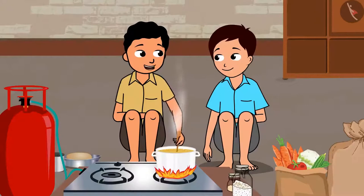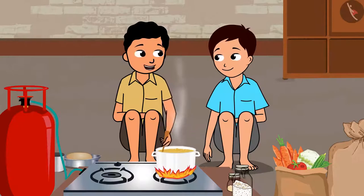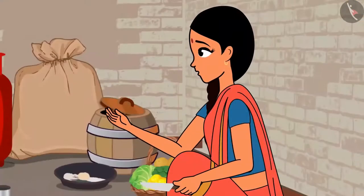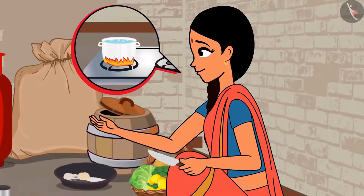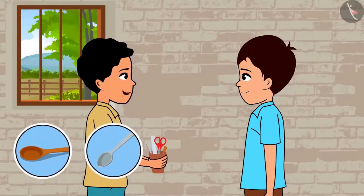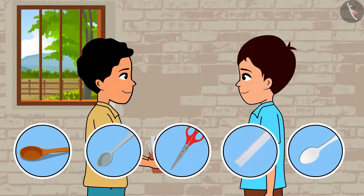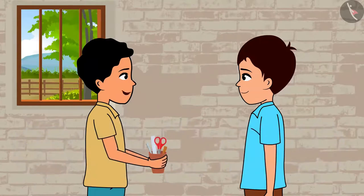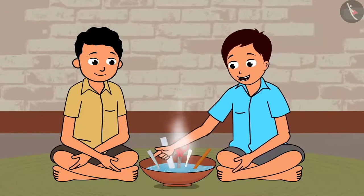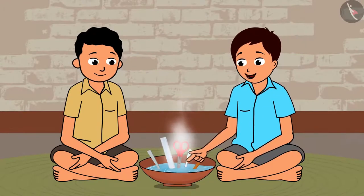Ramesh, let us do an experiment. Let us take different objects made up of different materials. Then let us dip them in hot water one by one. Let us then observe what happens to each object. Children, I shall warm the water and give it to you. Look Ramesh, I have this wooden spoon, steel spoon, this pair of scissors, this plastic scale and this ceramic spoon. Come let us dip all of them in this hot water. Look Ravi, this steel spoon has become so hot. And this wooden spoon, plastic spoon and ceramic spoon haven't become hot.